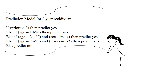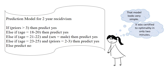Here is an example of a rule list generated by our algorithm. This list predicts whether someone will be arrested within two years of being released from prison. There is nothing unintuitive here. It finds that prisoners with longer criminal histories and younger prisoners are more likely to be arrested after they are released. This model looks like a heuristic for predicting recidivism, but it is a full-blown predictive model that was certified within two minutes to be optimal according to a regularized empirical risk on the training data.